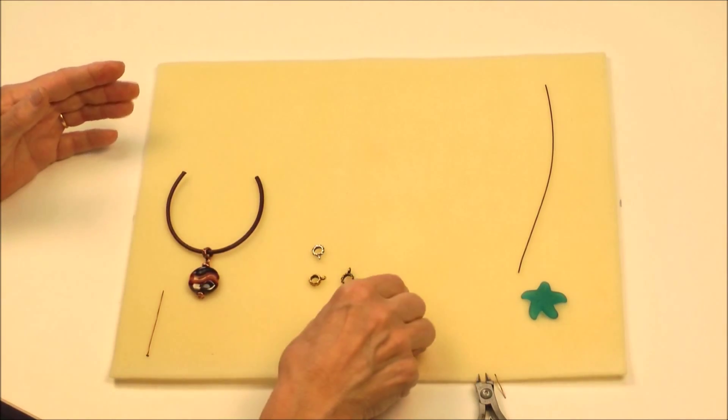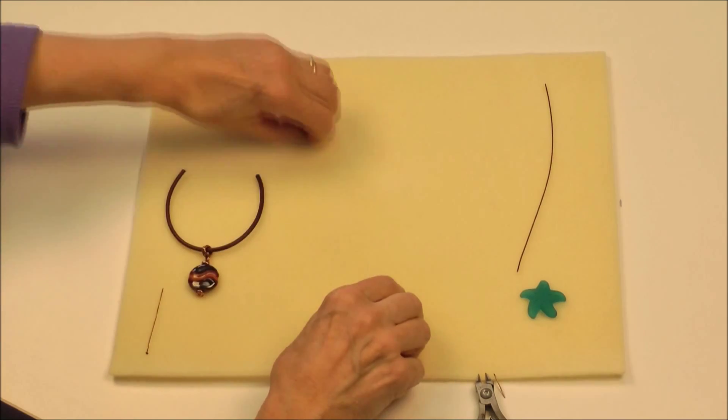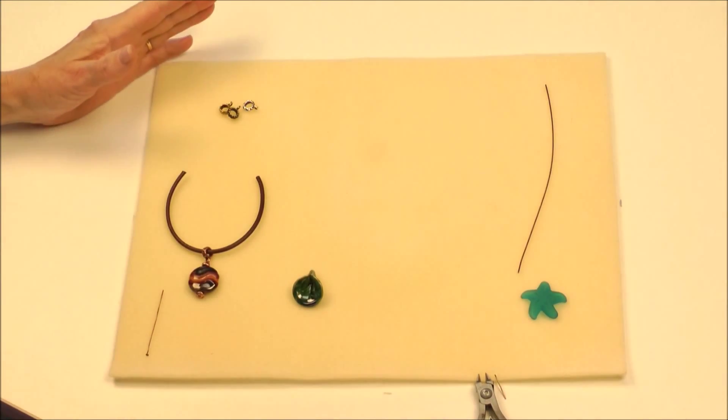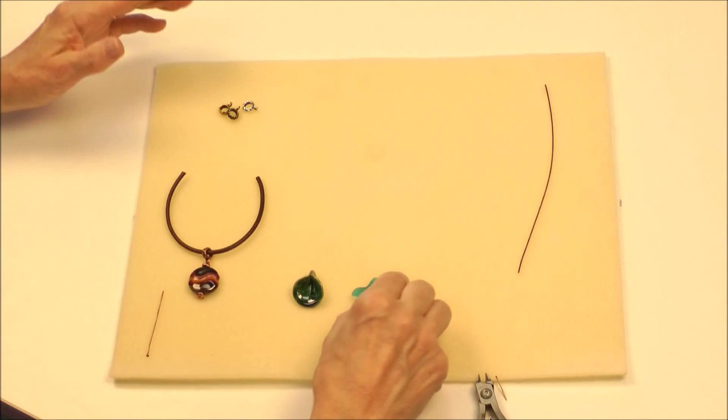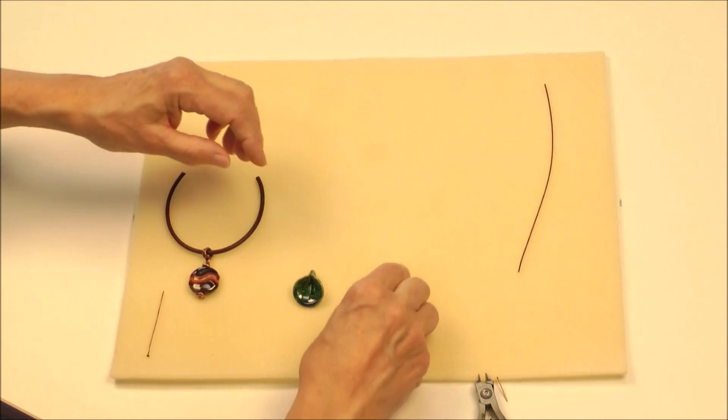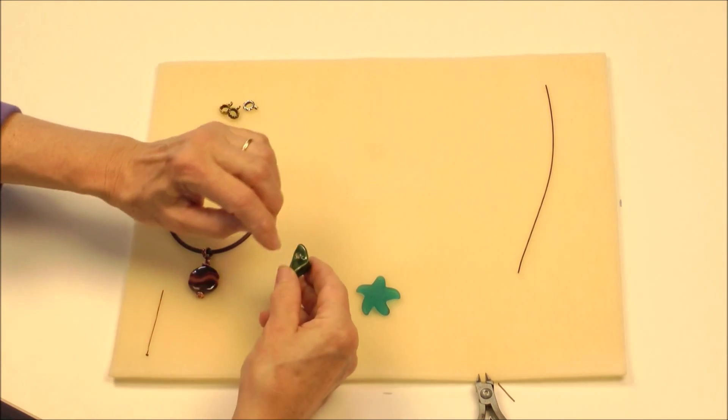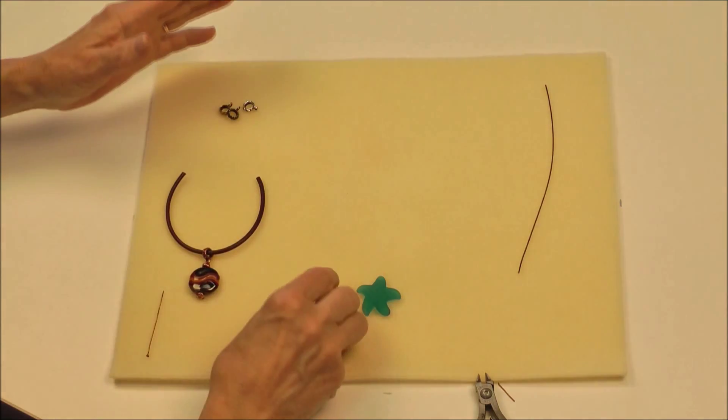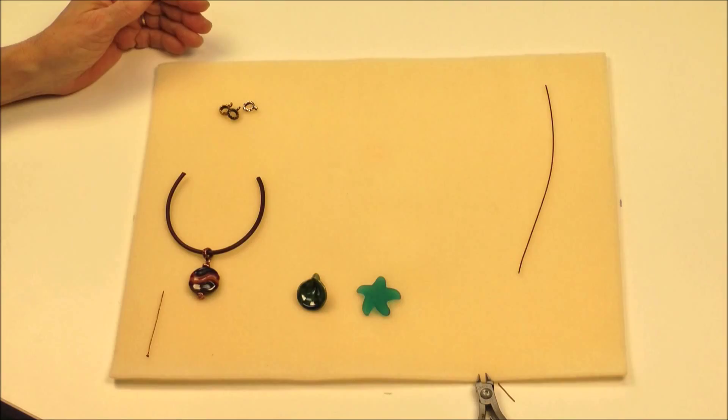Another technique that's really useful is what we call a briolette wrap. And this is used for beads and pendants that are top drilled. This one has a hole that goes from front to back and this trompetta bead has a hole that goes from side to side. This technique is equally applicable to both of these beads.